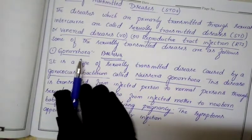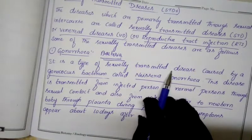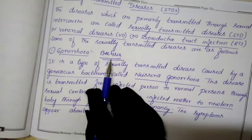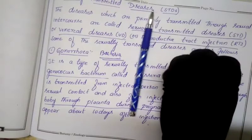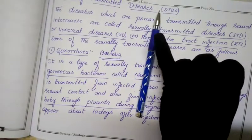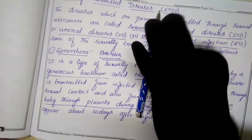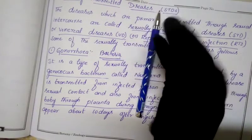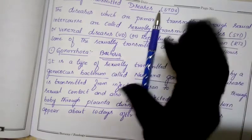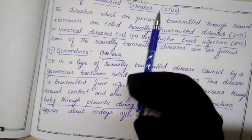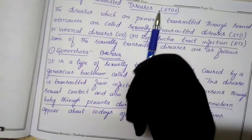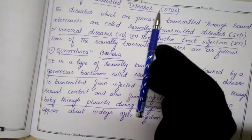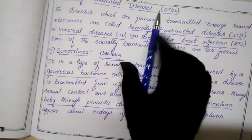The first sexually transmitted disease is gonorrhea, caused by bacteria. Microorganisms are classified into five groups: bacteria, protozoa, algae, fungi, and viruses — similar to how all organisms are classified into five kingdoms: Monera, Protista, Mycota, Plantae, and Animalia.